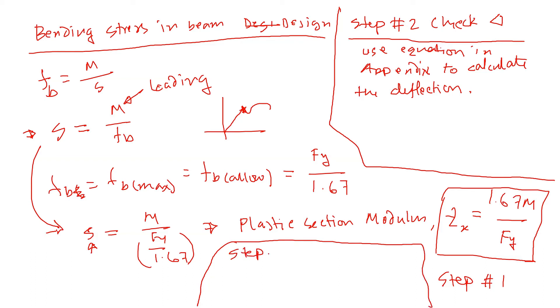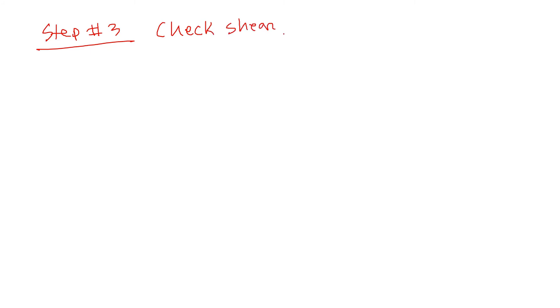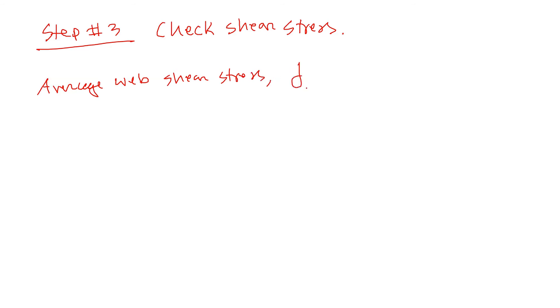Step number three in beam design: check shear stress — is the beam going to fail because of shear stress? The average web shear formula is used instead of the theoretical VQ/Ib formula. The average web shear stress is calculated as Fv = V divided by d times tw, where V is the shear force.